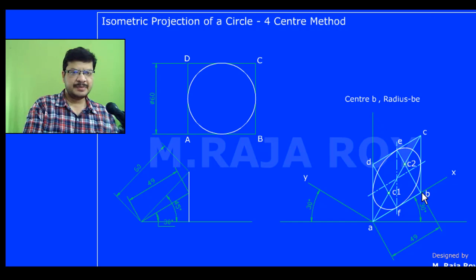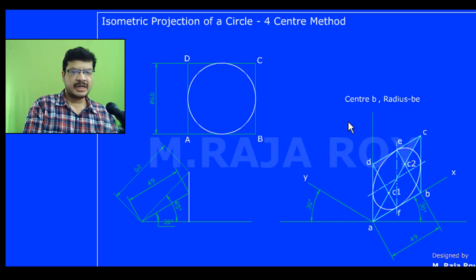Next, center is B, radius is BE, and draw this particular portion of the arc. This is the four-center method to get the isometric projection of a circle.